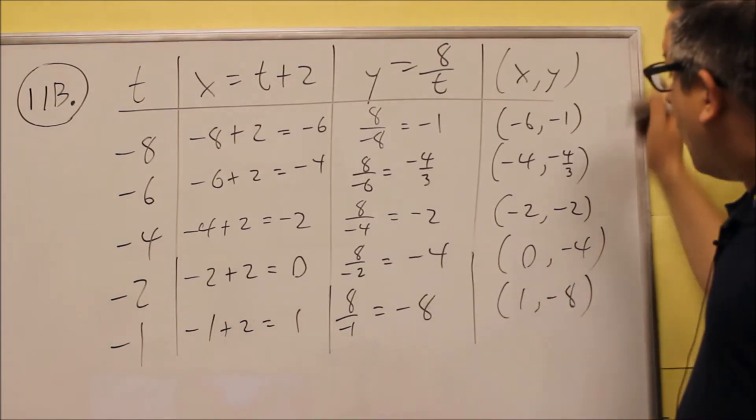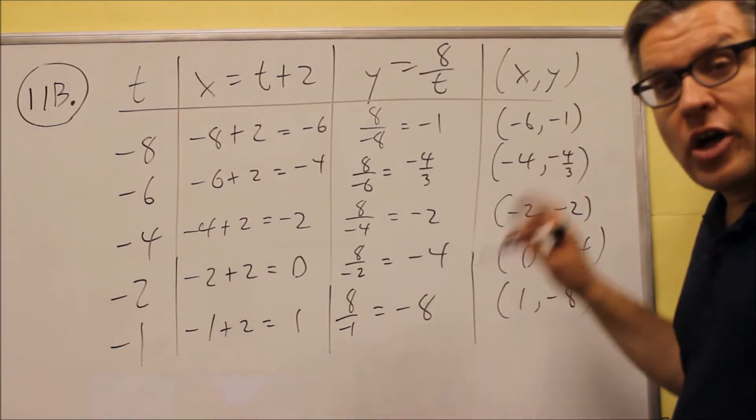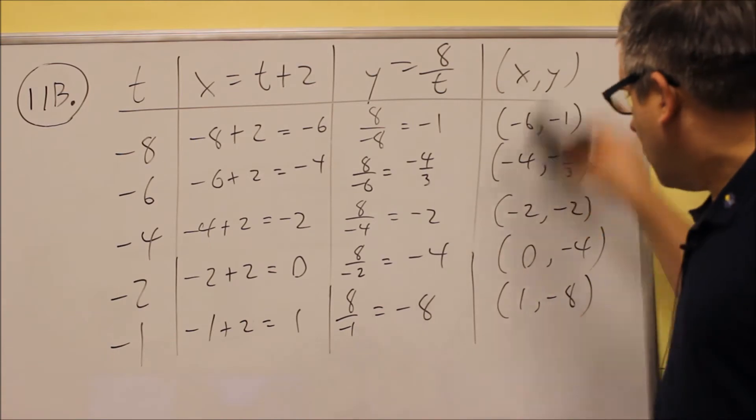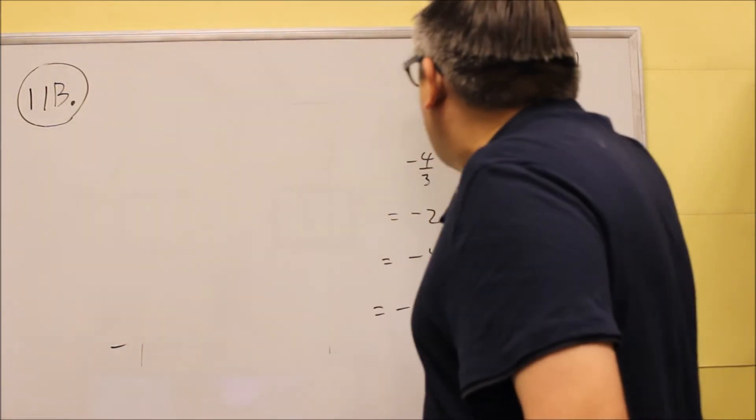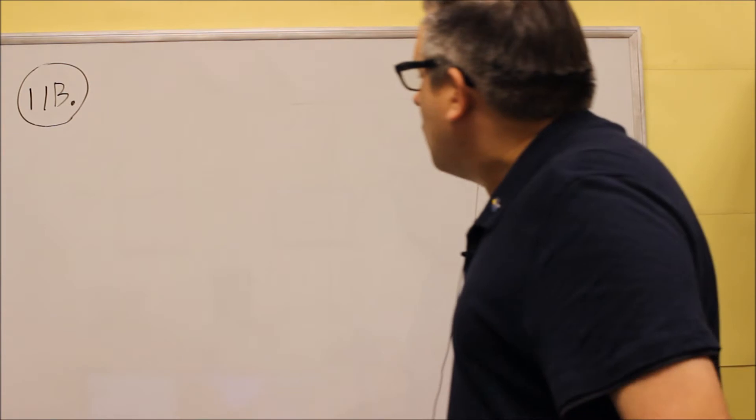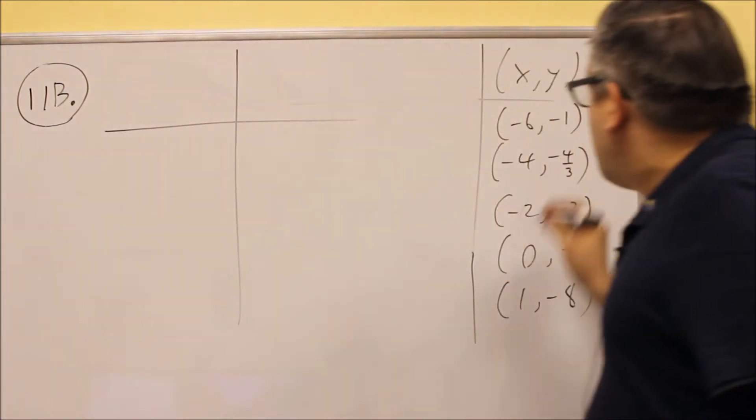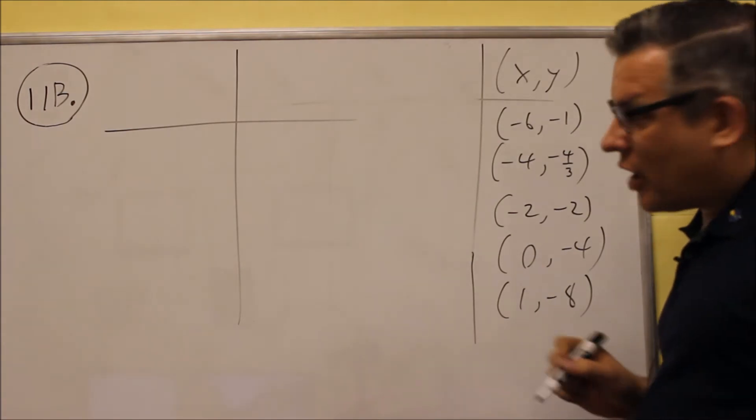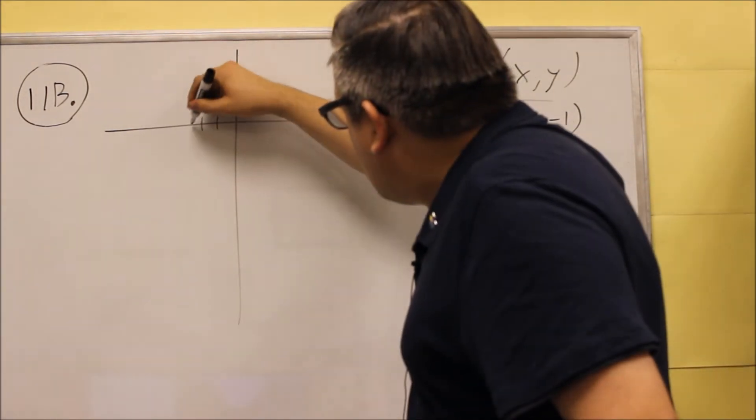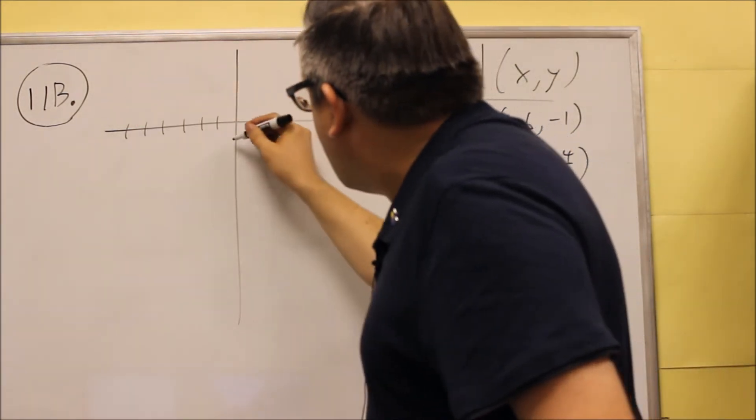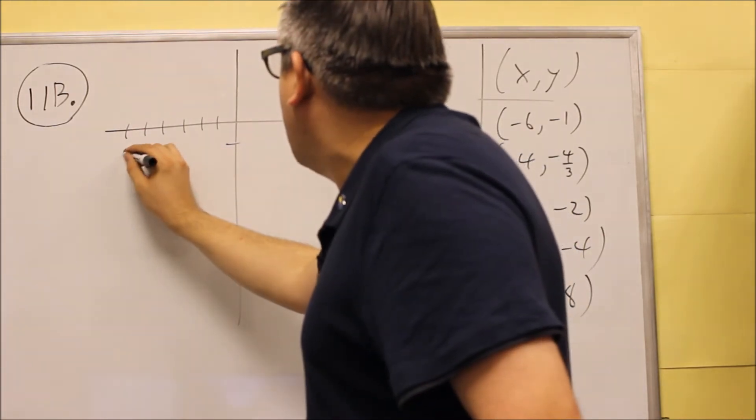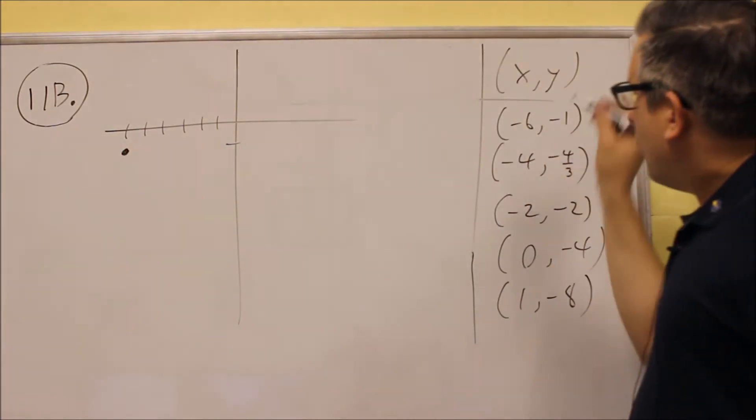And so all these values we have here we want to now plot. So I'll leave these up here and erase the rest of the table so we have some space and we're going to plot these. So I have negative 6 and negative 1. 1, 2, 3, 4, 5, 6, negative 6 and negative 1 will be starting from right here. That's your first point we're going to plot.